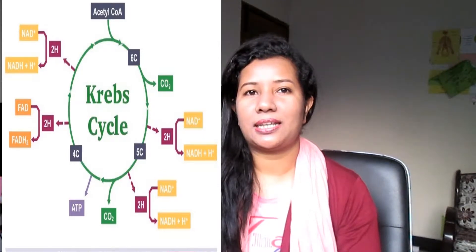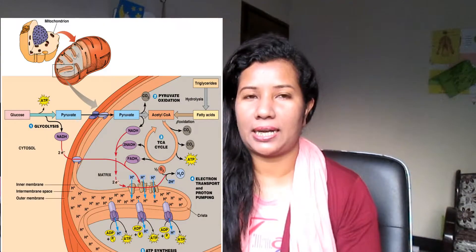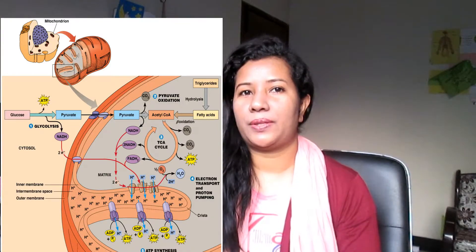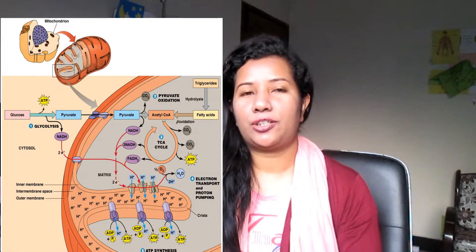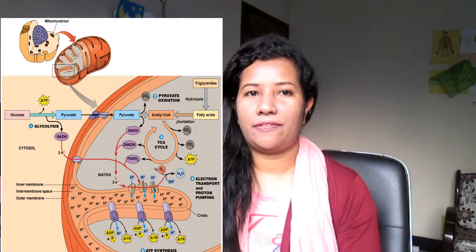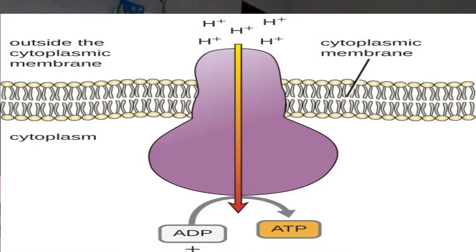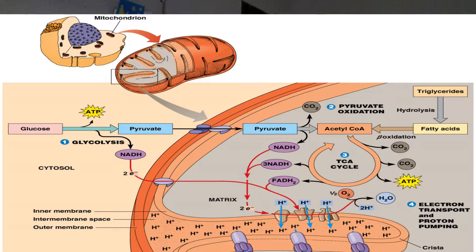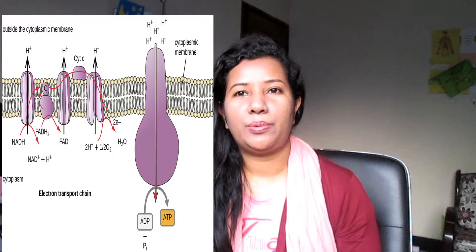However, most ATP in cells is generated using electrical potential energy. This energy is from the transfer of electrons by electron carriers in mitochondria and chloroplasts. It is stored as a difference in proton concentration across a phospholipid membrane, which is essentially impermeable to protons. Protons are then allowed to flow down their concentration gradient through a proton channel protein that spans the phospholipid bilayer.